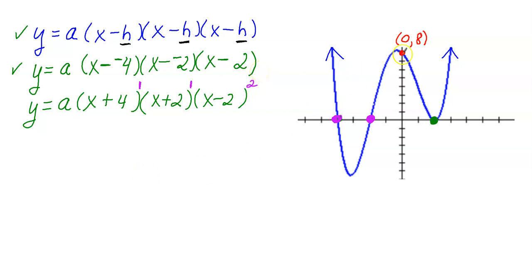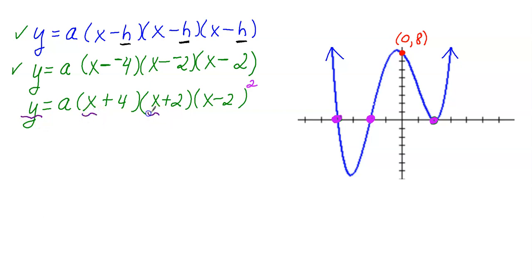Now I'm really getting somewhere. I haven't used the Y intercept yet, but I will now. The hidden exponent-1 terms don't need to be shown — you can leave them, but I'll remove them. You definitely need to keep the squared exponent on X minus 2. The next step is to figure out the A value by substituting in the Y intercept coordinates.